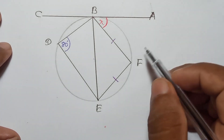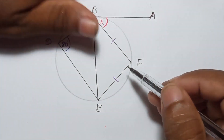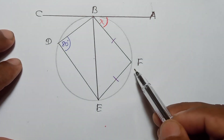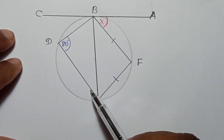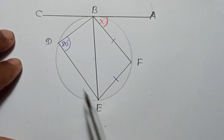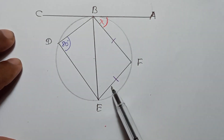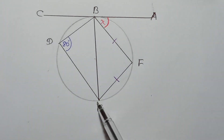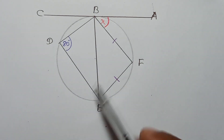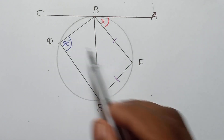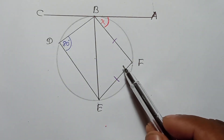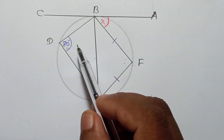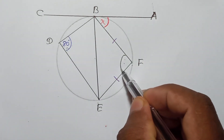Let's find x. You have to use the alternate segment theorem here. But first — BFED is a cyclic quadrilateral, very clear, all vertices on the circumference. In a cyclic quadrilateral, opposite angles are supplementary — they add up to 180. So if this angle is 80°, the opposite angle must be 100°.